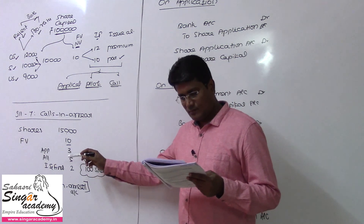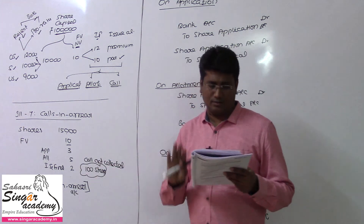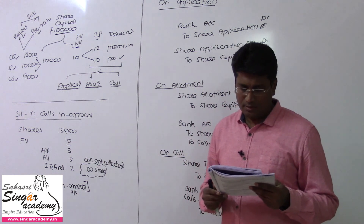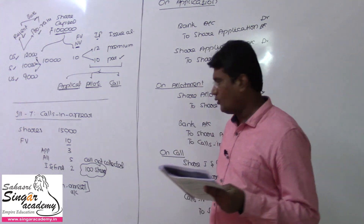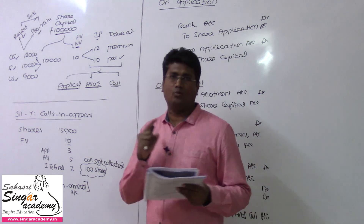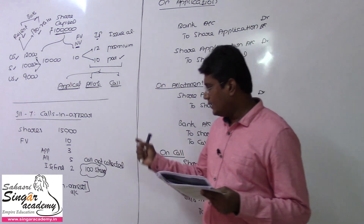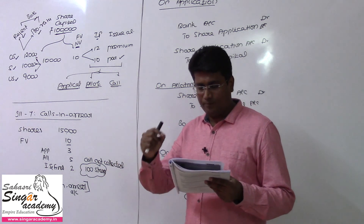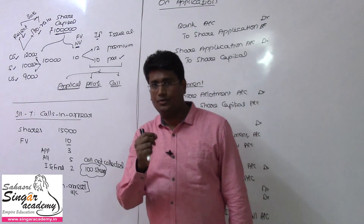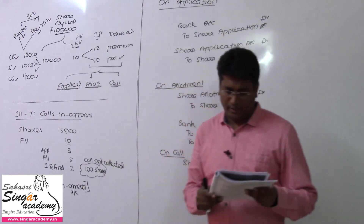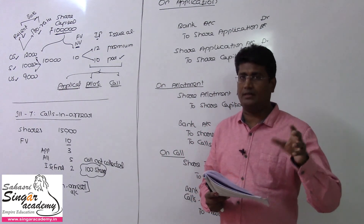3 rupees on application, 5 rupees on allotment, and 2 rupees on first and final call — these are the 3 installments. All money were duly received except one shareholder holding 100 shares who failed to pay the call money of 2 rupees. Pass necessary journal entries using Calls in Arrear account.